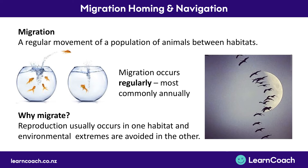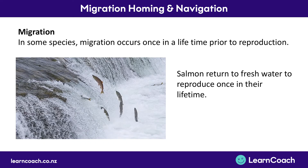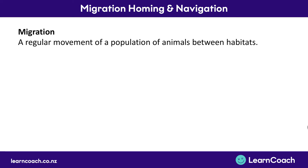While regular migration for most species means every single year, for some species this can be once in a lifetime, and it usually happens just before they reproduce. For example, salmon return to freshwater to reproduce only once in their lifetime. Same with eels — they migrate to deep marine trenches at the bottom of the ocean and reproduce only once in their lifetime.